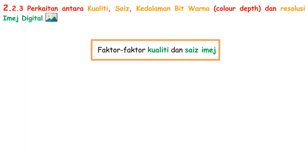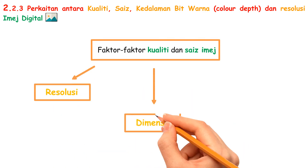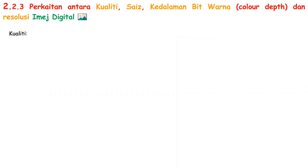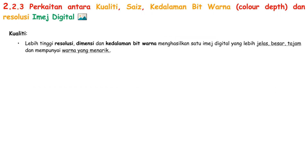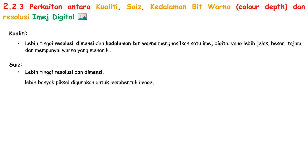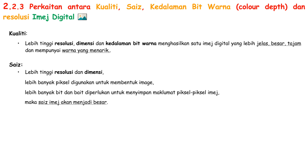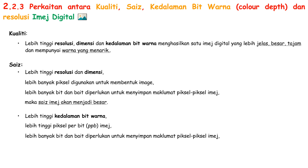The quality and size of an image are affected by resolusi, dimensi, and kedalaman bit warna. For quality, higher resolusi, dimensi, and kedalaman bit warna produce a digital image that is clearer, larger, sharper, and has more attractive colours. For size, the higher the resolution and dimension used, the more pixels are used to form the image. More bits and bytes are needed to store the pixel information, so the image size will be large. Similarly, the higher the kedalaman bit warna, the higher the pixel per bit of the image, requiring more bits and bytes to store, making the image size large.